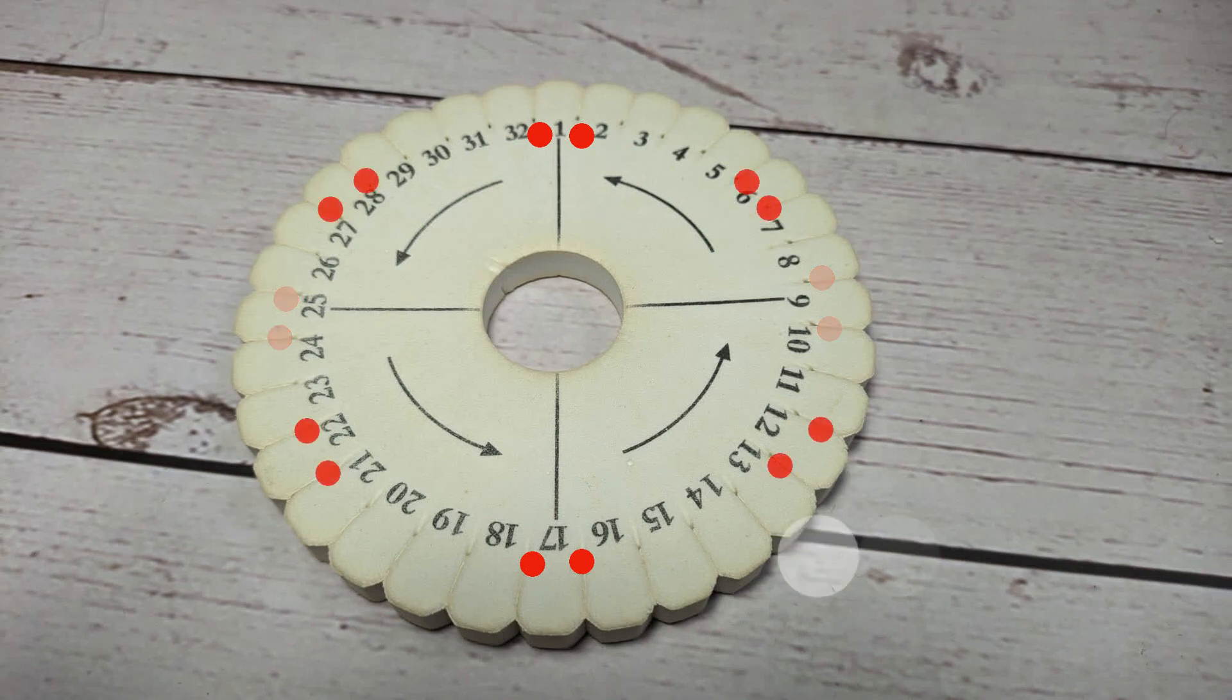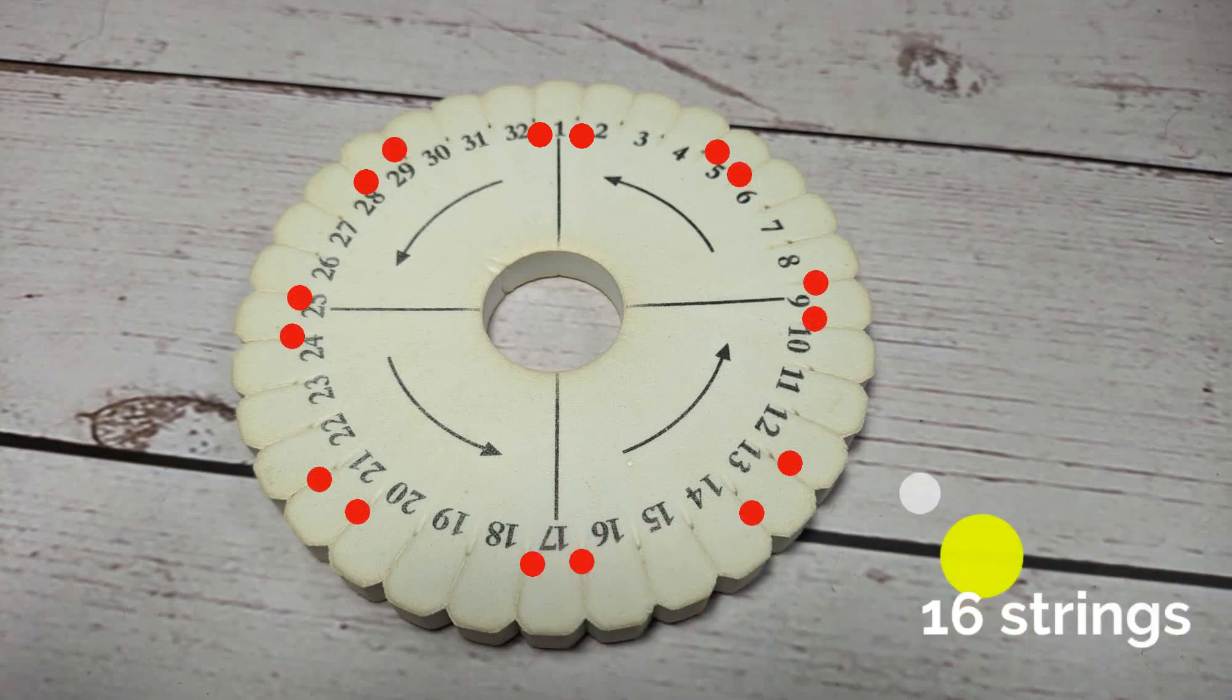Now, the next you could do, the next number up is 12. And you can see here that kind of spreads them out a little bit differently. But you still get the idea. They're spread around the disk. There's two strings up to the top, bottom and then on the sides.